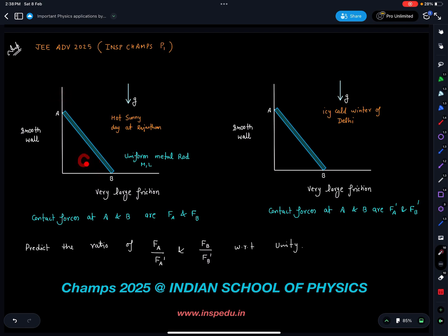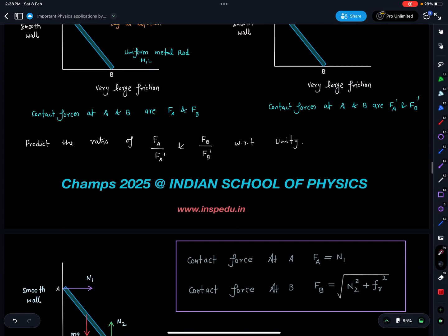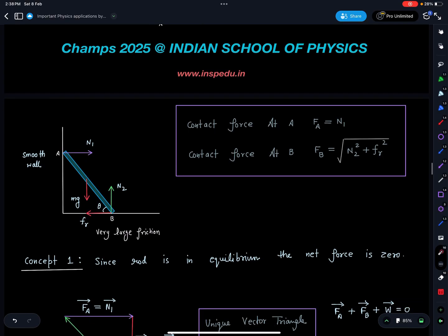So basically let's express everything in terms of this angle theta. Theta in this case is more, theta in this case is less. And contact force at B is a resultant of N2 and FR, so it is going to be root of N2 square plus FR square.